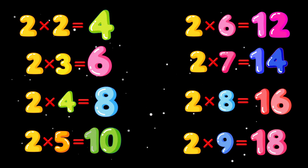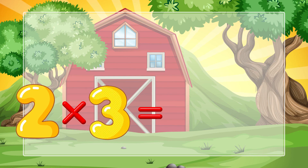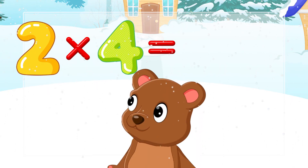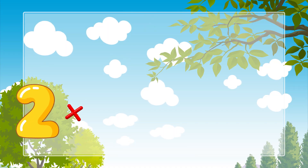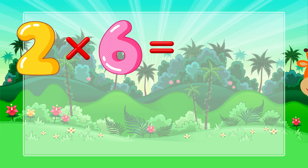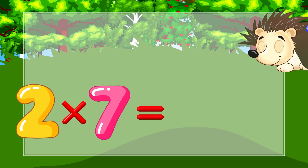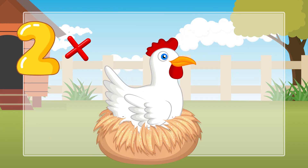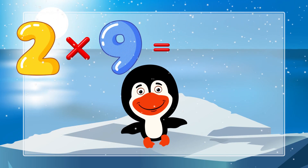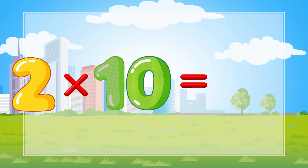Let's sing again. Two times two is four. Two times three is six. Two times four is eight. Two times five is ten. Two times six is twelve. Two times seven is fourteen. Two times eight is sixteen. Two times nine is eighteen. Two times ten is twenty.